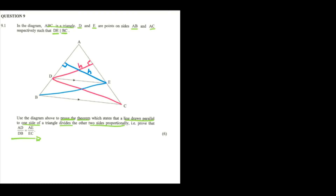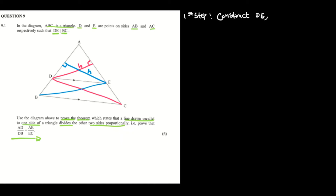Now that we've drawn our lines which form triangles, we are going to identify the areas of these triangles. The first step was to construct line DC and BE, where DC is perpendicular to AE, and BE is perpendicular to DA.